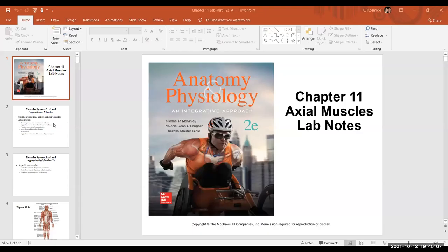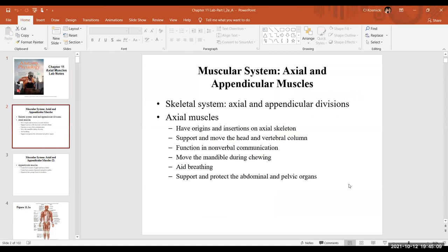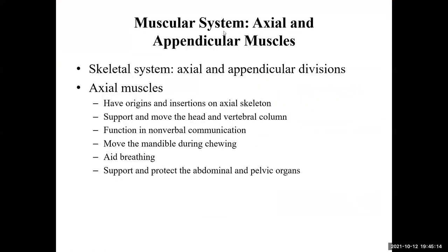We'll start off by talking about the axial muscles. We saw with the skeleton how we had the appendicular and the axial skeleton. For the skeletal system, we're going to divide it up that way for lab as well — we're going to have axial and appendicular divisions.